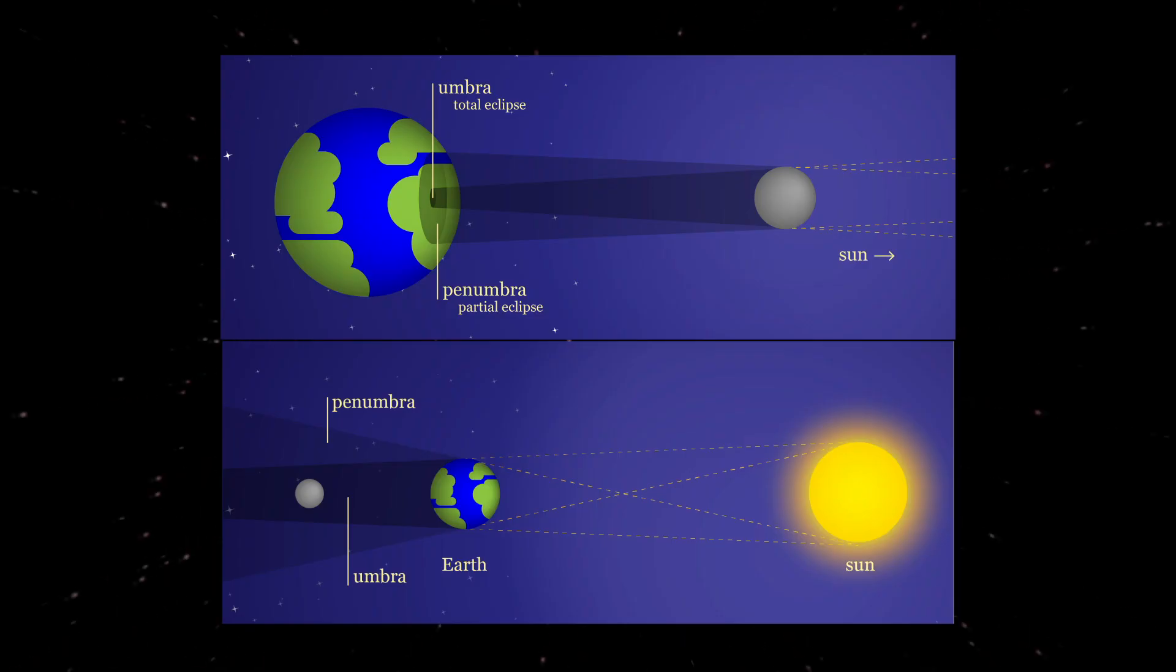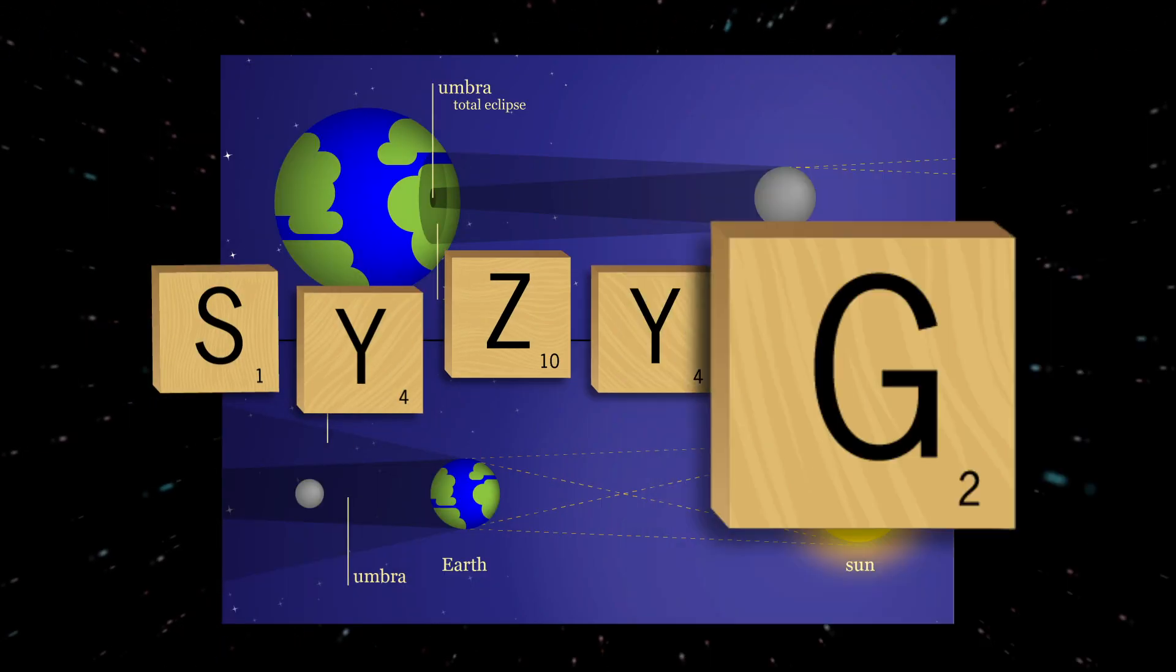Both solar and lunar eclipses occur when Earth, Moon, and Sun are aligned in a straight-line configuration, what astronomers refer to as syzygy.